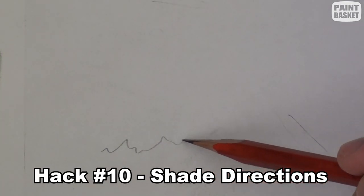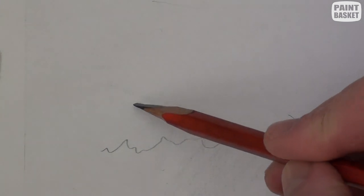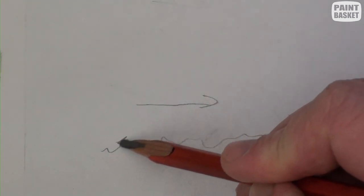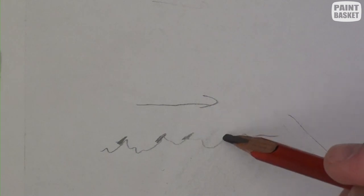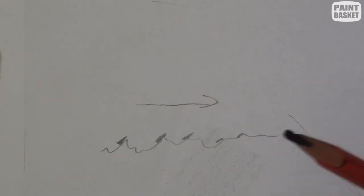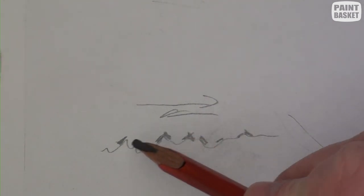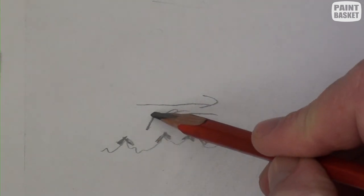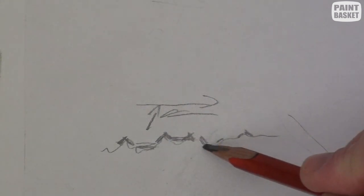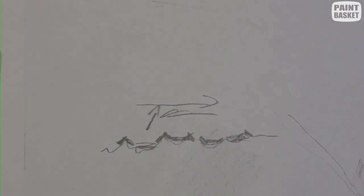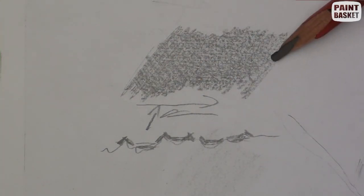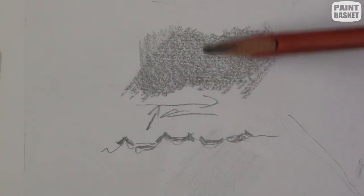Hack number ten is to shade in multiple directions. If you look at your drawing paper under a microscope, you'll notice that it isn't smooth. There are little ridges on the surface. When shading in one direction, only parts of those ridges are filled with graphite. By shading in multiple directions, you cover more of those ridges, giving you a smoother looking shading. For more ways to get beautiful smooth shadings, you can watch my 10 Pencil Shading Hacks tutorial. The link is in the description below.